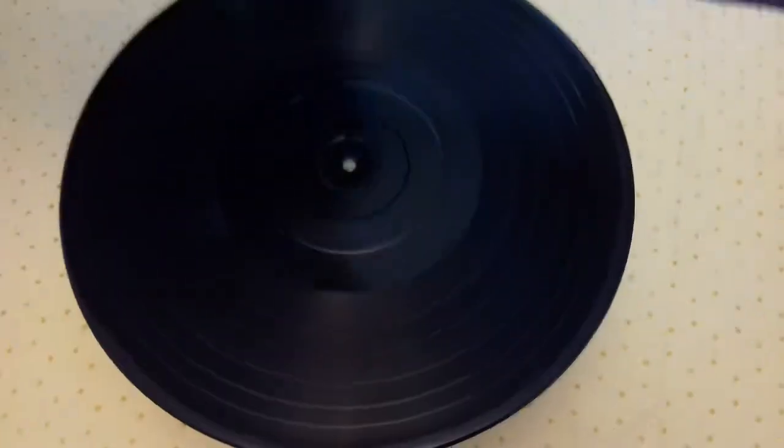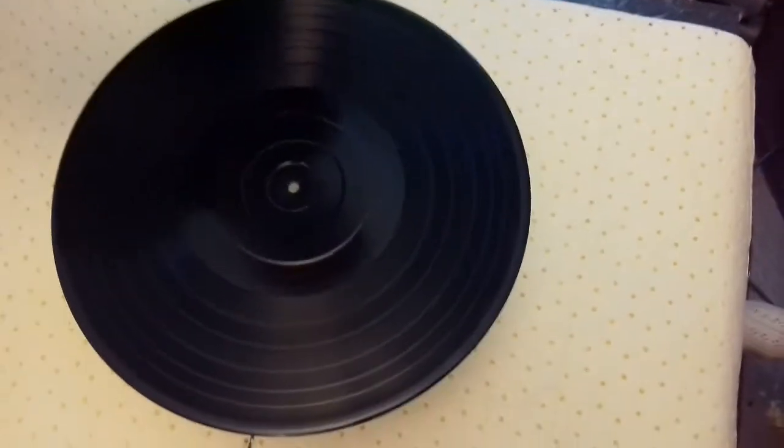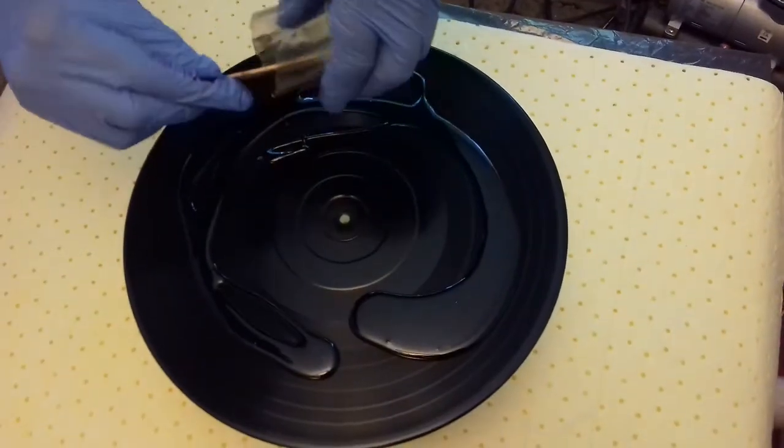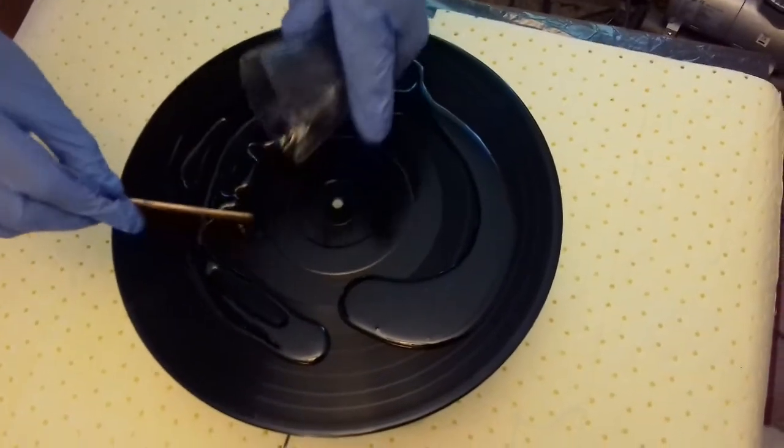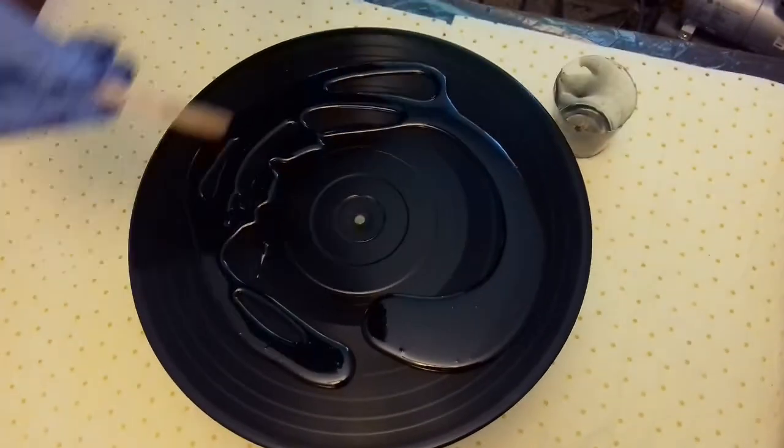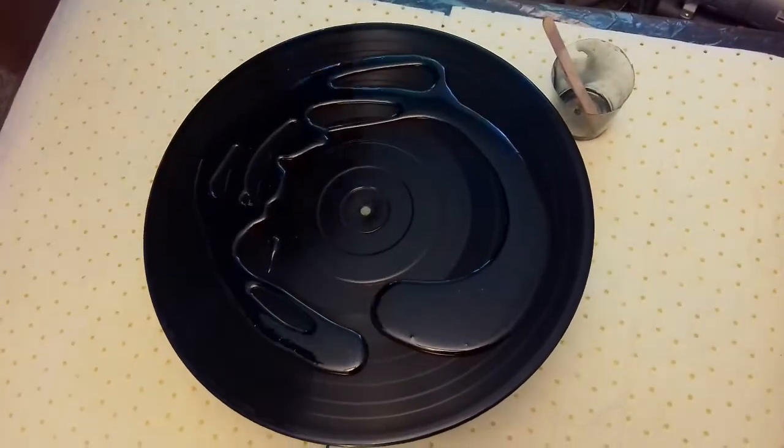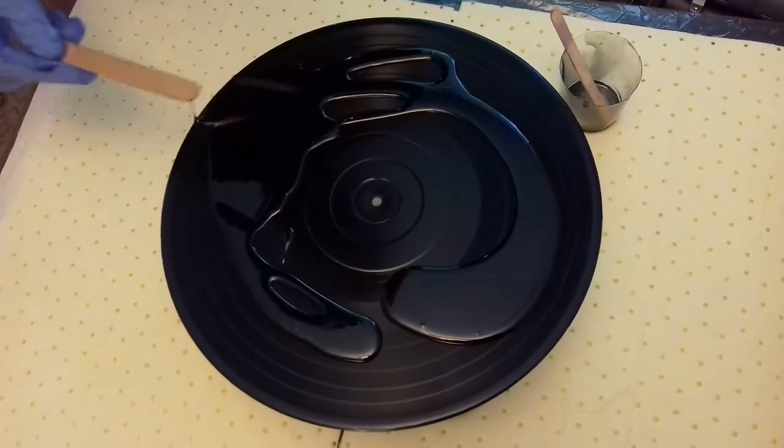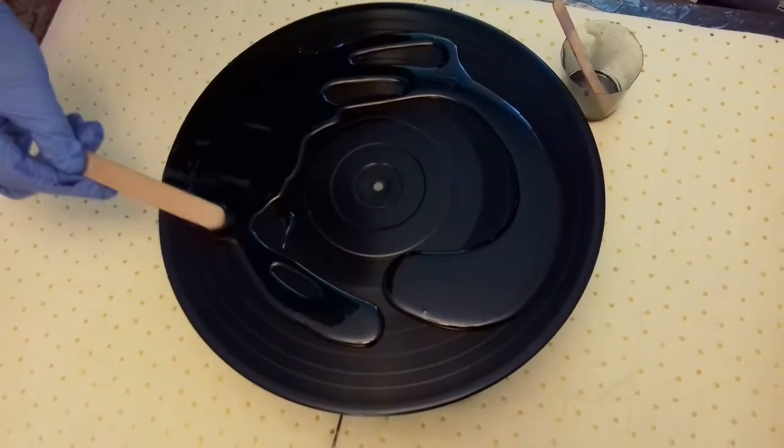Now I'm going to pour the black, which is the main color, on the record. With a large stick, I'm going to fan it out onto the record and make sure it all goes to the sides.